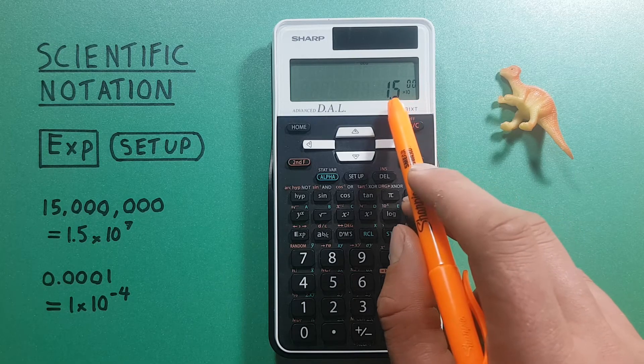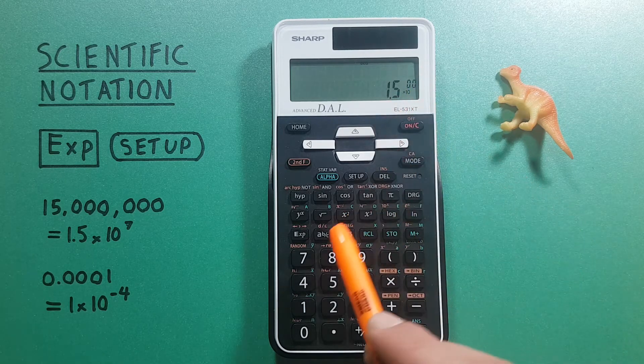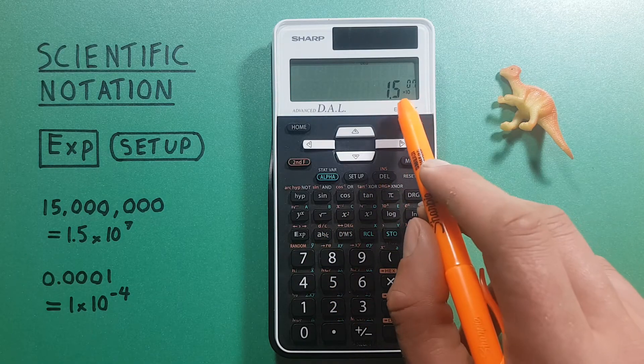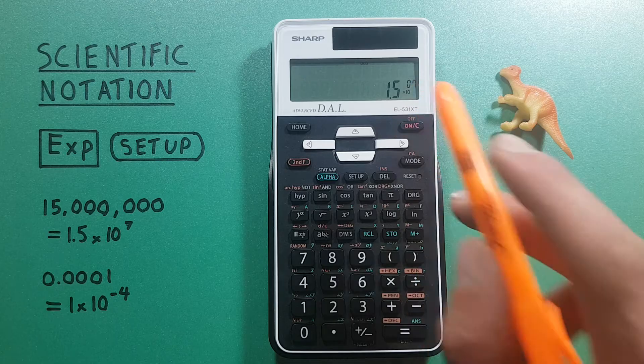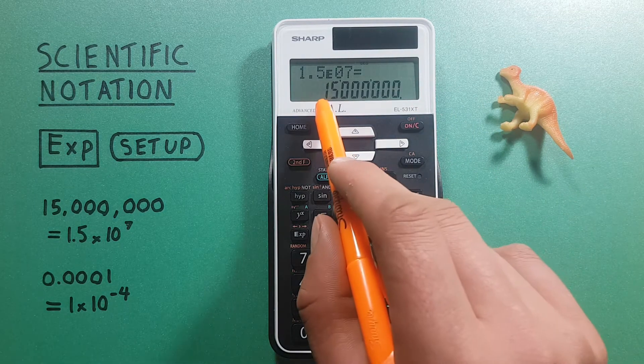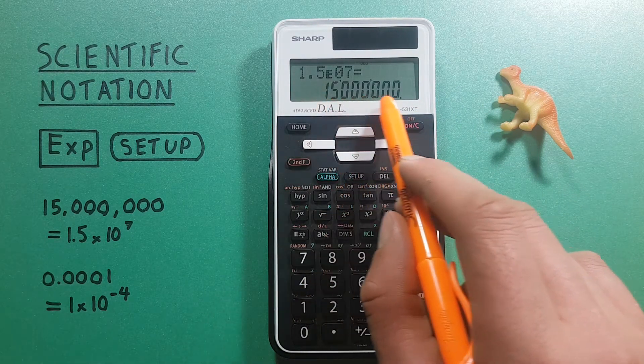We enter 7, there we go, 1.5 times 10 to the seventh and equals and there we go, this is 15 million.